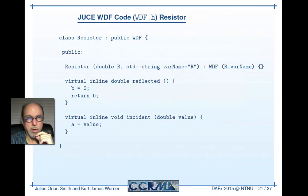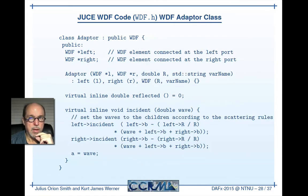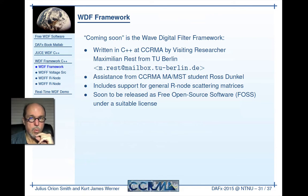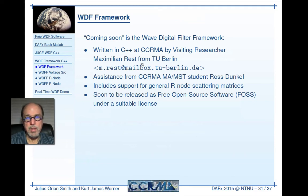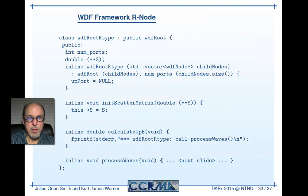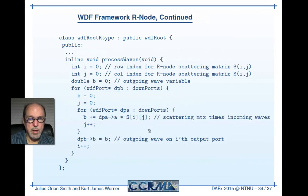Coming soon is the Wave Digital Filter Framework, also written in C++, with more up-to-date extensions and improvements such as instantaneous root nodes and voltage sources. Maximilian Ress from TU Berlin has been doing most of the work, with Ross Dunkel, an MAMST student at CCRMA, helping. There is support for general R-node scattering matrices. The software follows a similar pattern with these extensions — here is the implementation of a general N-by-N scattering matrix being applied to incoming waves, producing outgoing waves.